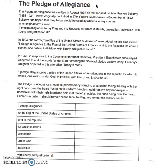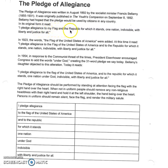The Pledge of Allegiance is something that is said in every public school in the United States to begin each school day. The Pledge of Allegiance was written in August 1892 by the socialist minister Francis Bellamy, who lived between 1855 and 1931. It was originally published in the Youth's Companion on September 8th, 1892. Bellamy had hoped the pledge would be used by citizens in any country. In its original form it read: 'I pledge allegiance to my flag and the republic for which it stands, one nation indivisible, with liberty and justice for all.'